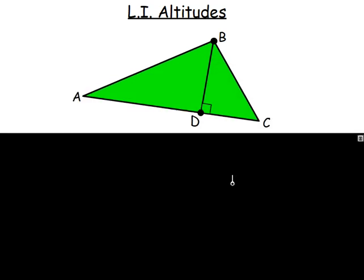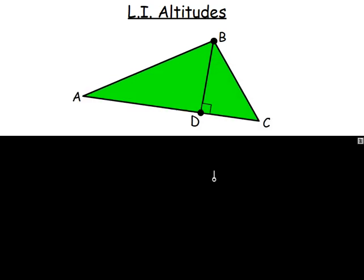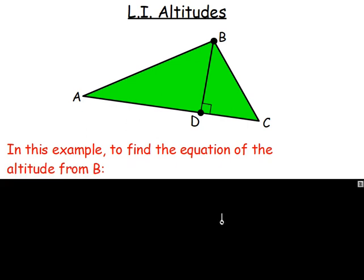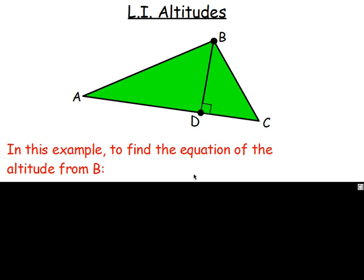With that diagram from the last page, very similar to medians, I'm going to give you three steps. In this example, to find the equation of the altitude from B, think gradient-point equation. You don't know the gradient. For the point, you know point B but definitely don't know point D. It's not a midpoint. Even if we knew A and C, we couldn't work it out. Working out the midpoint does not help us.